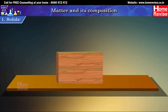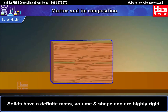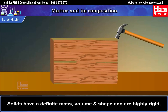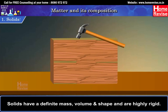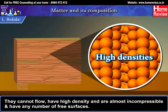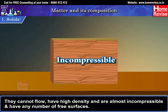First, solids. Solids have a definite mass, volume and shape and are highly rigid. They cannot flow, have high density and are almost incompressible, and have any number of free surfaces.